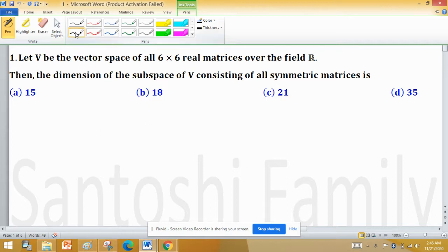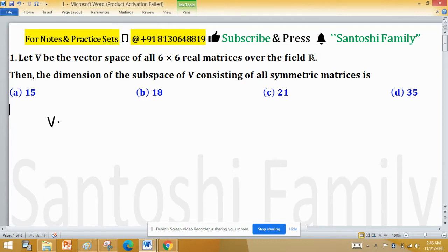Now V is a vector space of all 6 by 6 matrices such that M transpose equals M. This is the way of writing the vector space in compact form, where M is a symmetric matrix and entries of this matrix come from the real field R, meaning all entries will be real.